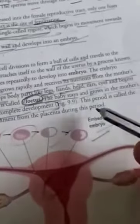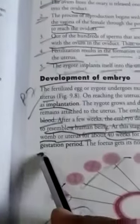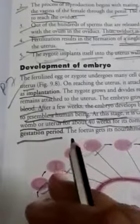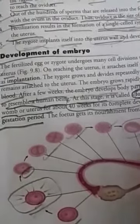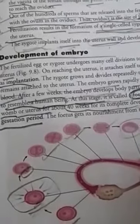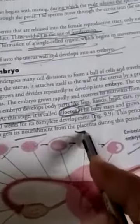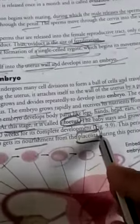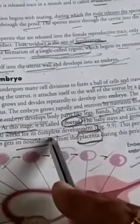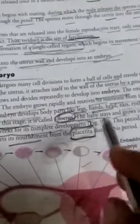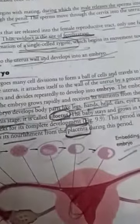This period of about 40 weeks or nine months is called the gestation period — the period in which an embryo develops completely into the form of a fetus. The fetus gets its nourishment from the placenta. The placenta is a disc-like tissue structure which supplies nourishment to the developing embryo during the gestation period. Thank you class, we continue in the next part.